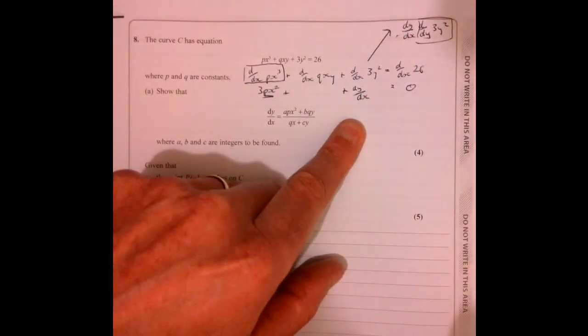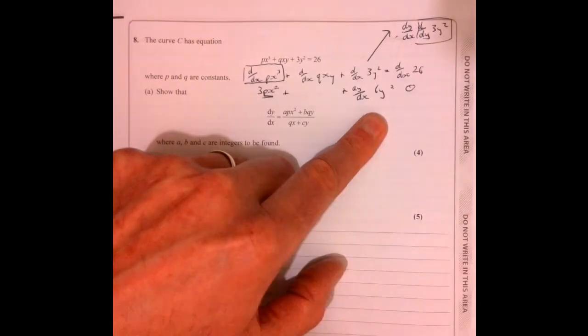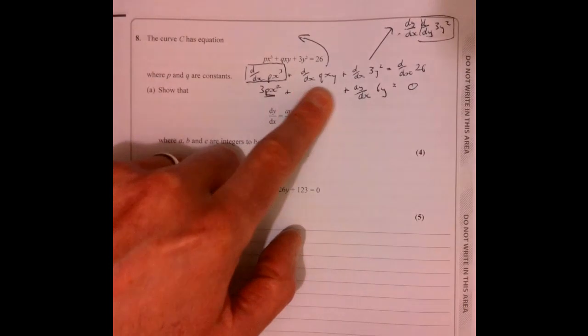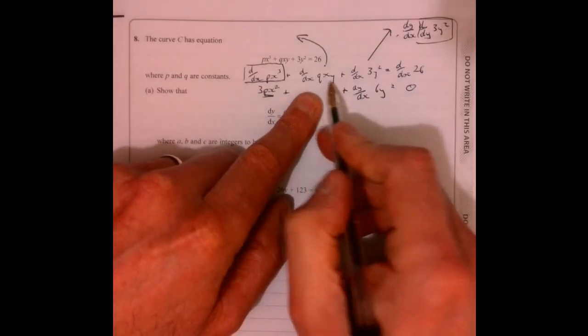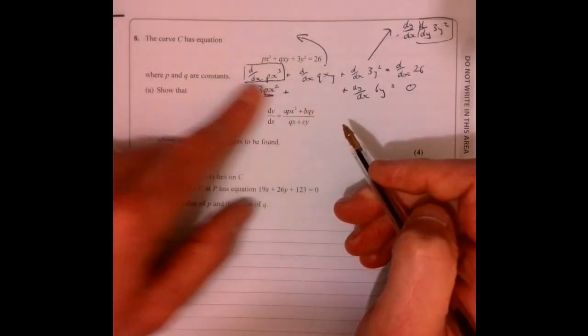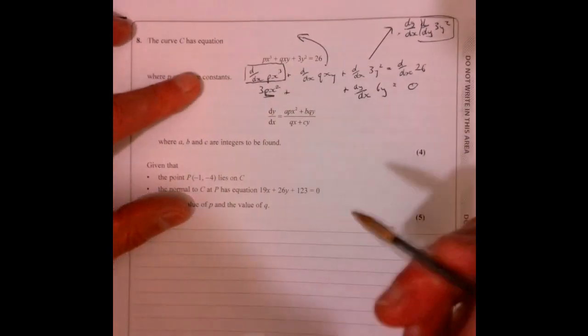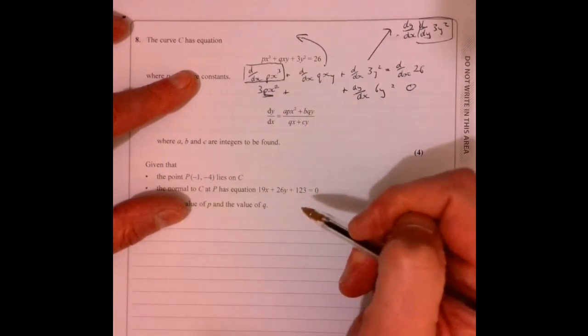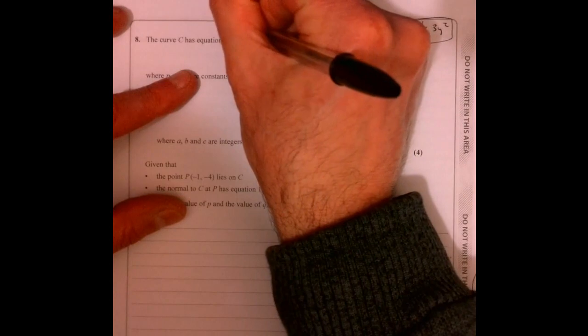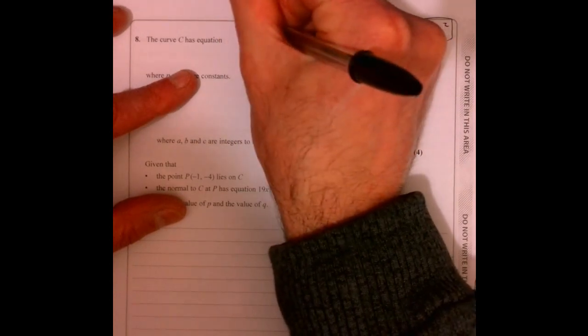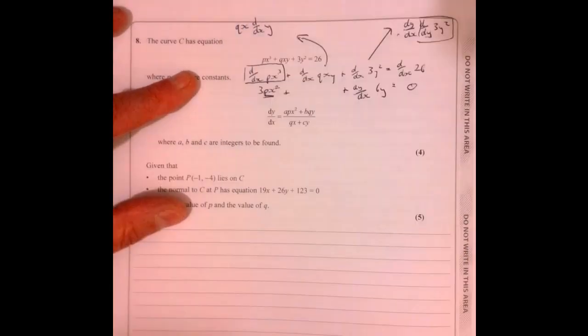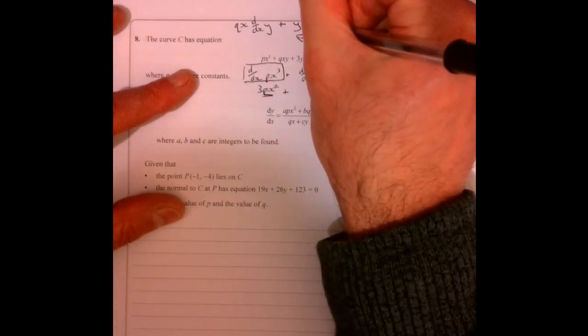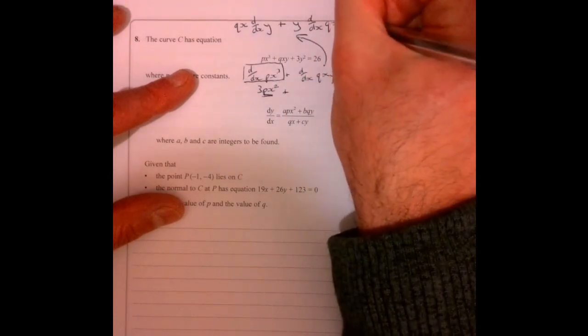That's going to be dy over dx multiplied by 6y. Now let's have a little think about what we do just here. Now I need to split this up because it's x multiplied by y. Just rewrite it and pop this bit in between the x and the y. So you've got qx and you've got d over dx and y, and then plus and then just write it the other way around.